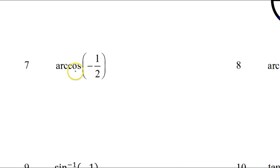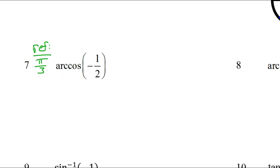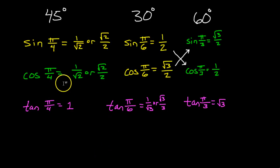Arc cosine is just an angle — it's the angle whose cosine is negative 1 half. Forget the negative for a second. The cosine of what angle is positive 1 half? That's going to be pi over 3, but that's just the reference angle. I memorized that the cosine of pi over 3 is positive 1 half, but I want negative 1 half.